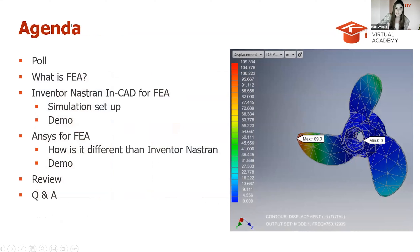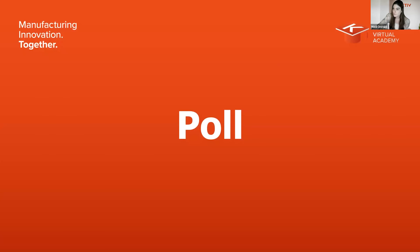To summarize our agenda for today, I'm first going to give a brief overview of what finite element analysis is and how it can be used to streamline the engineering design process. From there, we will be doing a thermal stress analysis using Inventor Nastran and CAD, and then use the same model to demonstrate how ANSYS can do this simulation. Now we'll go ahead into our poll question.